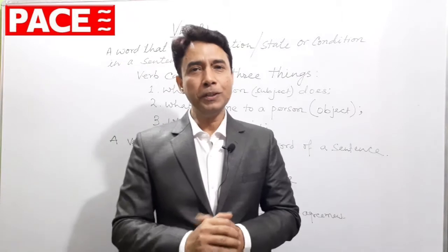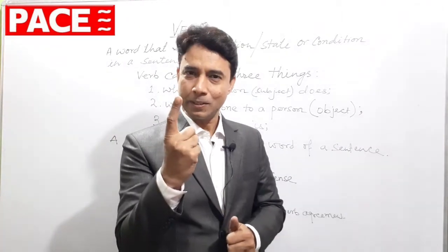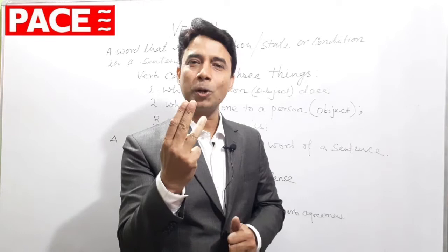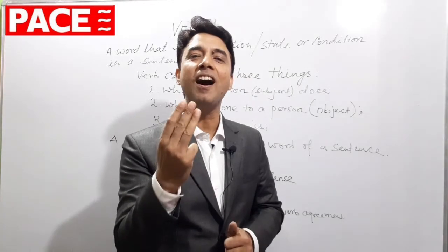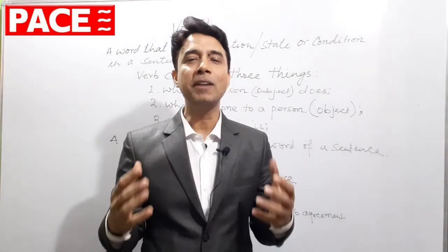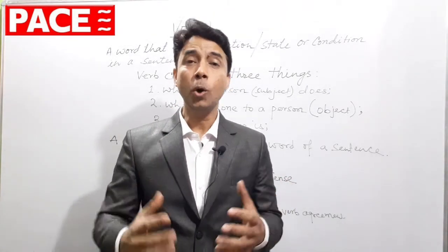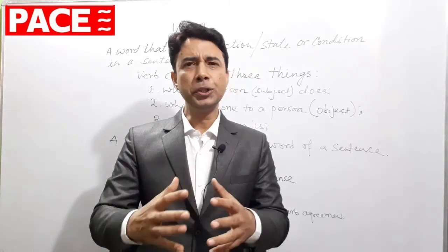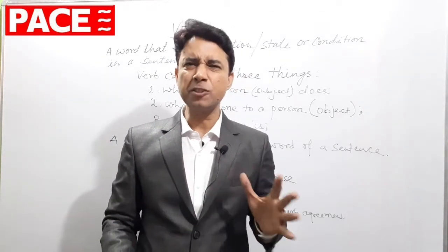Verb describes three important things: what a person does, what is done to a person, and what a person is. These three things are described by verb. And in a sentence, verb can change five different types of actions.